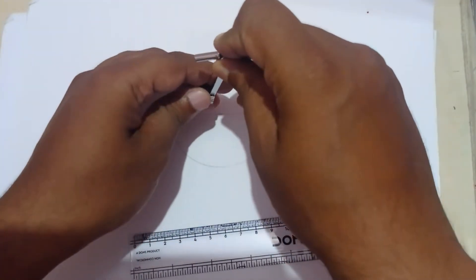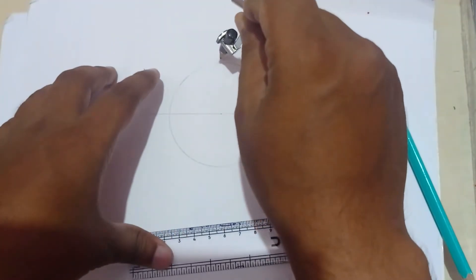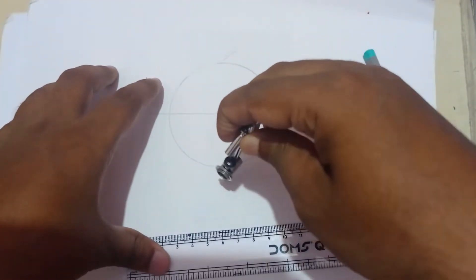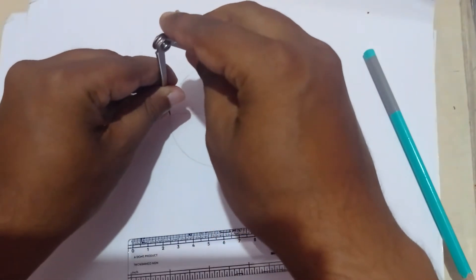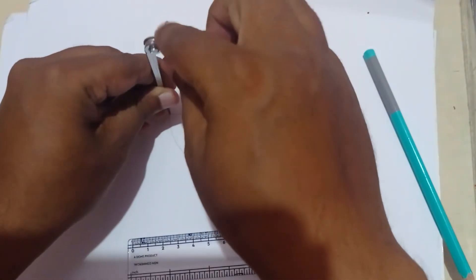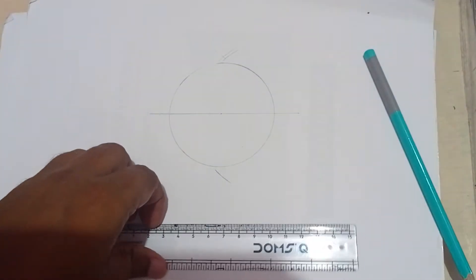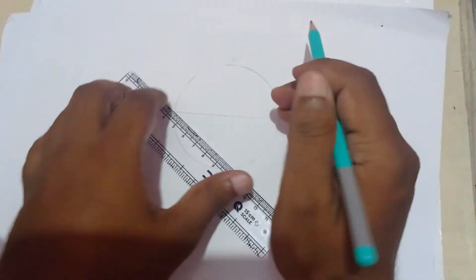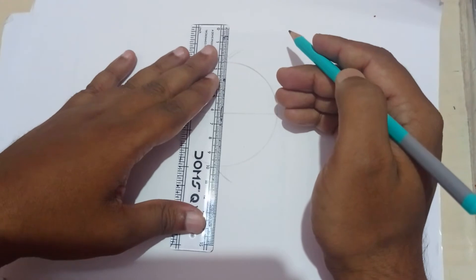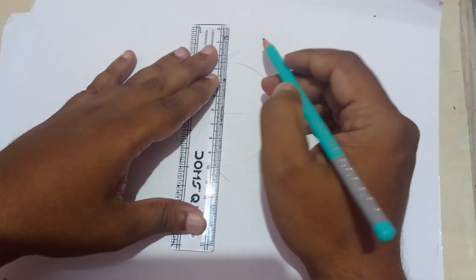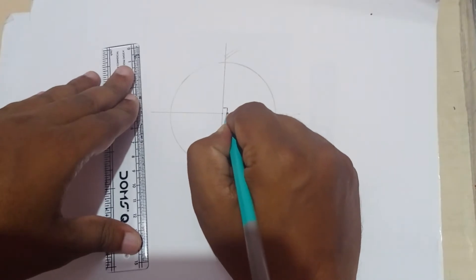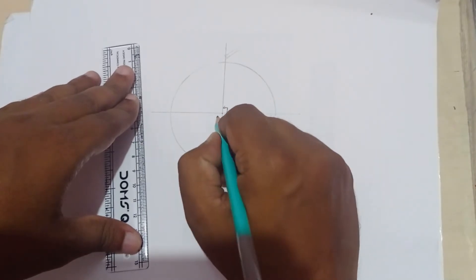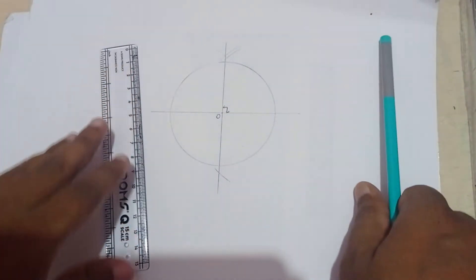Cut the arc. You can measure this length and cut it anywhere here or here, no problem, same length. Then join these lines here. These two lines are exactly perpendicular. This point I will give as O.